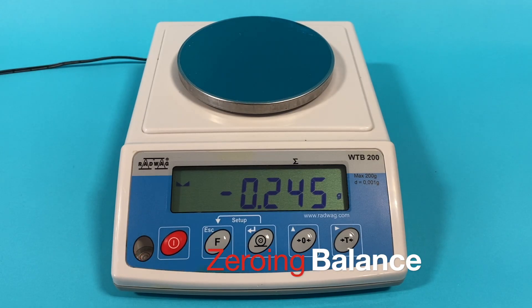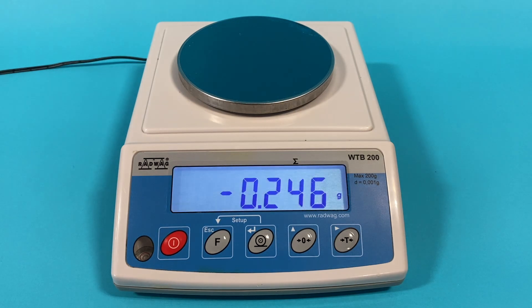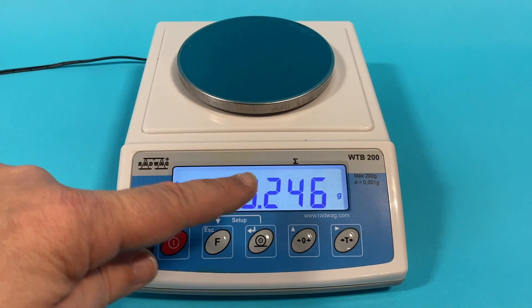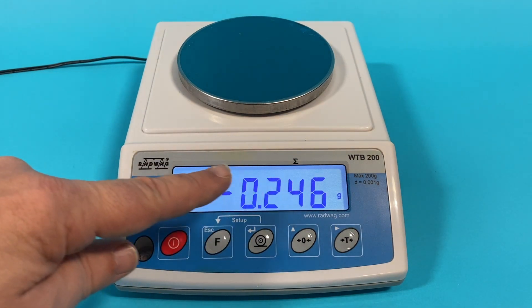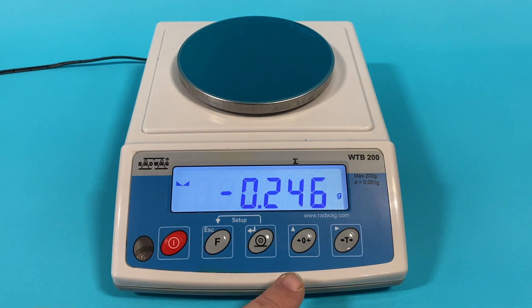In the course of this activity you will be using a three decimal place balance. You will become familiar with its operation and how to take accurate readings from it. Initially your balance may display a small value. In order to make accurate observations you will need to zero the balance as shown in the video.